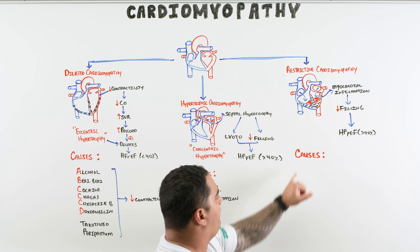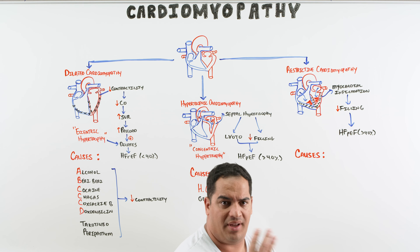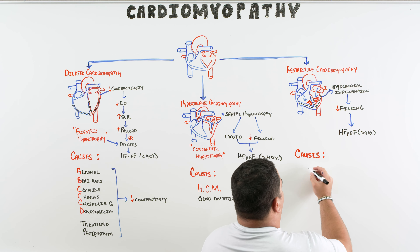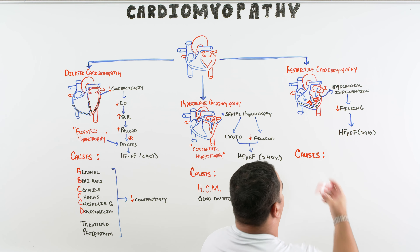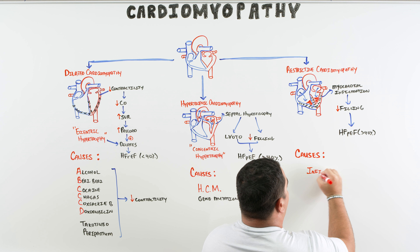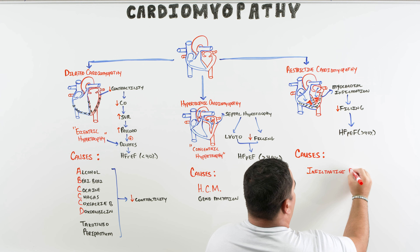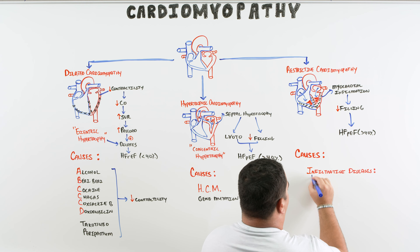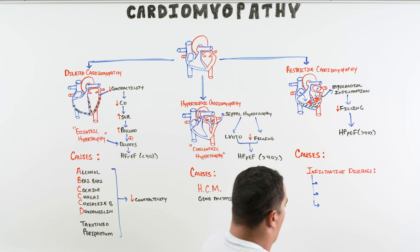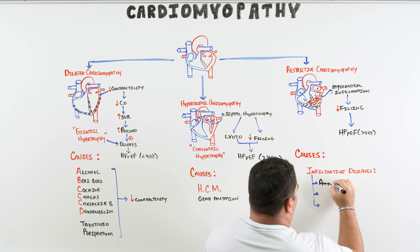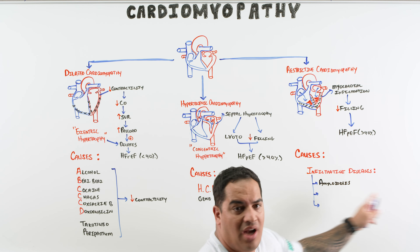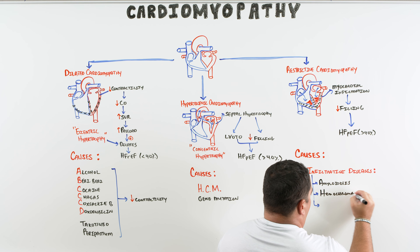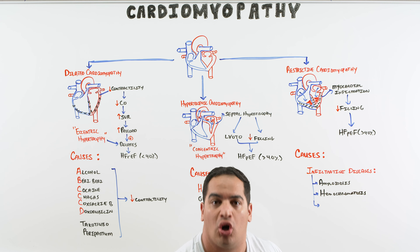What's causing the infiltration? There are three key causes. By far the most common is amyloidosis. The second is hemochromatosis. The third is sarcoidosis. These are the infiltrative diseases that lead to reduced ventricular filling.